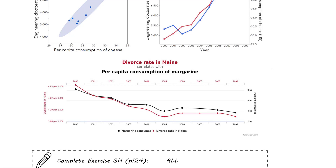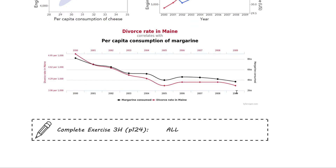Have a go at a short exercise looking at these issues around correlation and causation — is there a common response, a third variable involved — and consider what we might be able to say about those things.